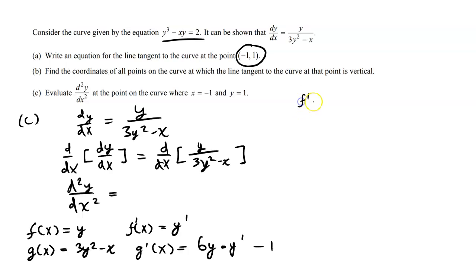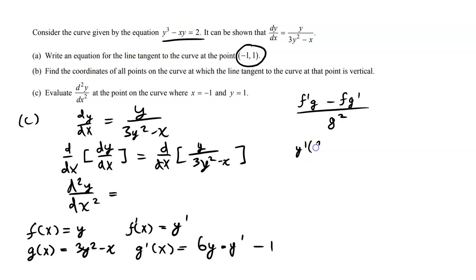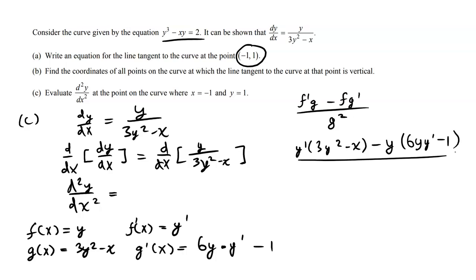Plugging into the quotient rule: the way I remember it is differentiate the numerator first, then switch it, and square the denominator. So we get: y prime times (3y squared minus x), minus y times (6y · y prime minus 1), all divided by (3y squared minus x) squared.